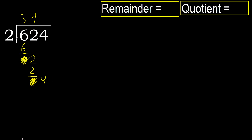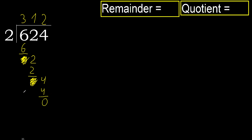Bring down. 2 multiplied by 3 is 6 — is greater. Multiply by 2 is 4 — is not greater. Subtract: 4 minus 4 is 0. Therefore, 0.